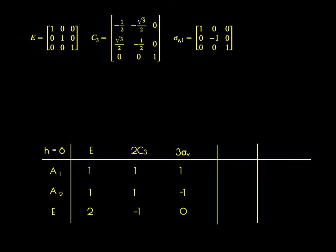Remember, a character is just the trace of a square matrix. We take the trace of these square matrices and derive a reducible representation with a character for E of 3, a character for C3 of 0, and a character for sigma v of 1.